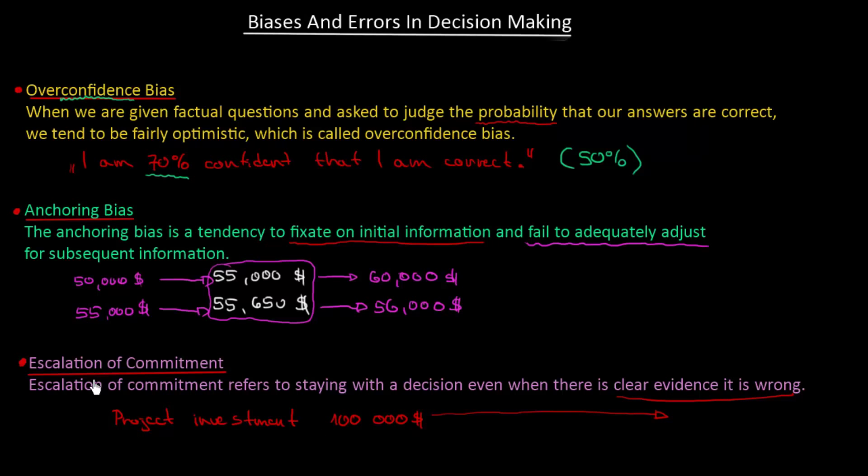But what the escalation of commitment does is that this manager who has invested $100,000 will push more and more and maybe will invest $400,000 more just to avoid the fact of being wrong or to admit that he or she was wrong. This is a really dangerous situation when someone in the organization has escalation of commitment and doesn't want to admit that he or she was wrong.